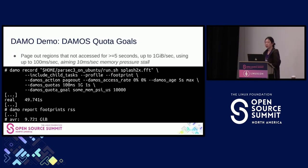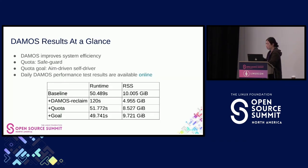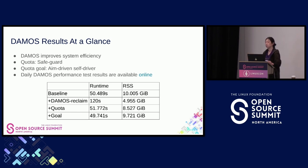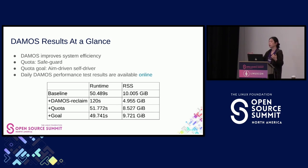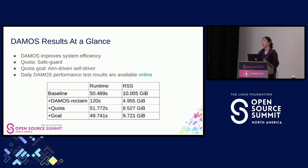To summarize the results: on the baseline, runtime was about 50 seconds and resident set size was about 10 GB. Using DAMON-based proactive reclamation, we reduced the resident set size though runtime increased. By using quotas and goals, we were able to tune things more easily and safely. We also have daily testing of DAMON for multiple configurations, running every day and publishing results online. If you have interest, please visit the project site and check the output of multiple DAMON schemes to see how much benefit it could provide.